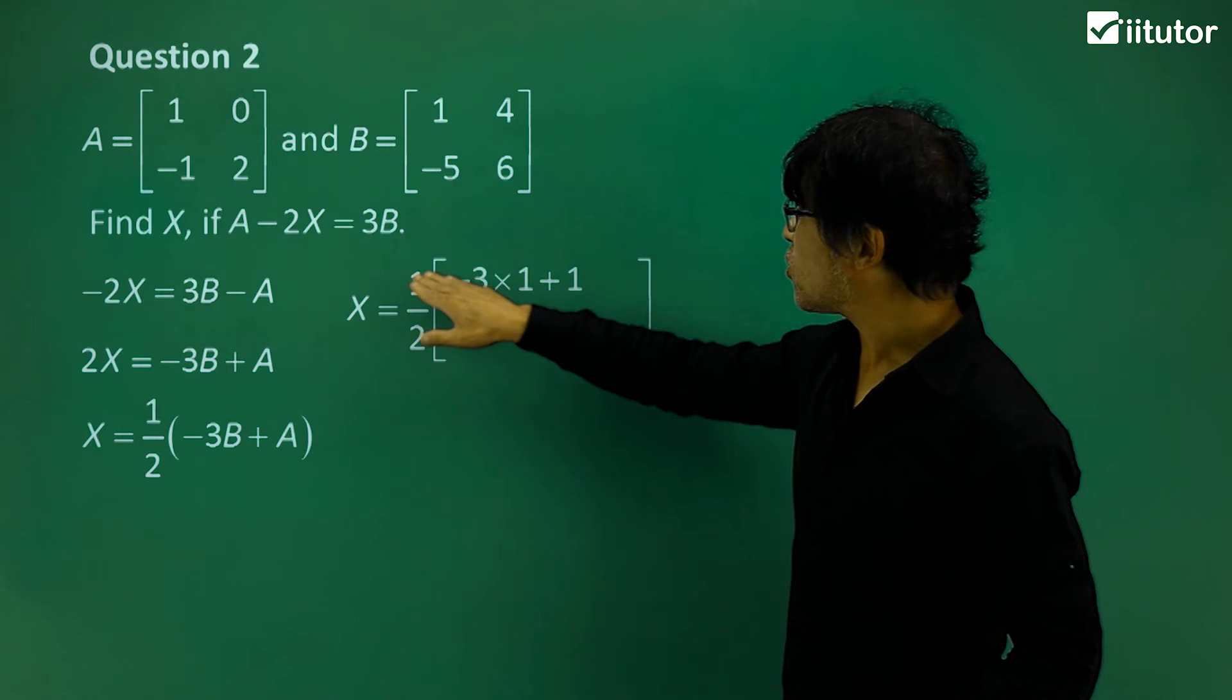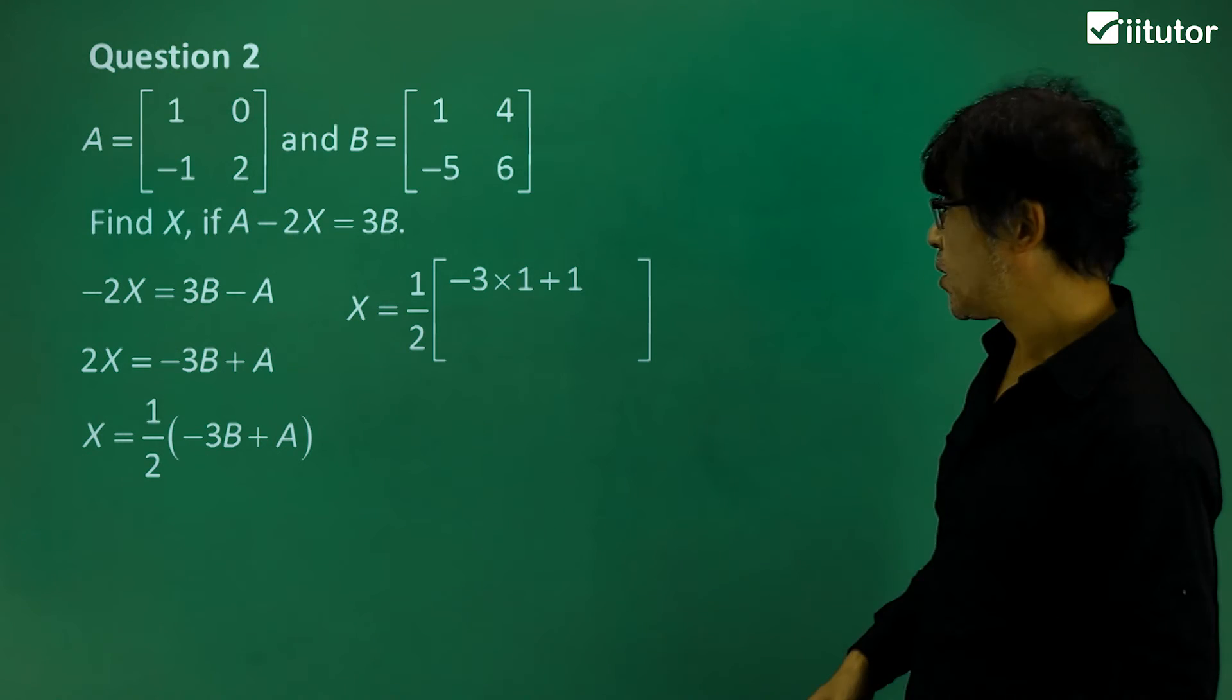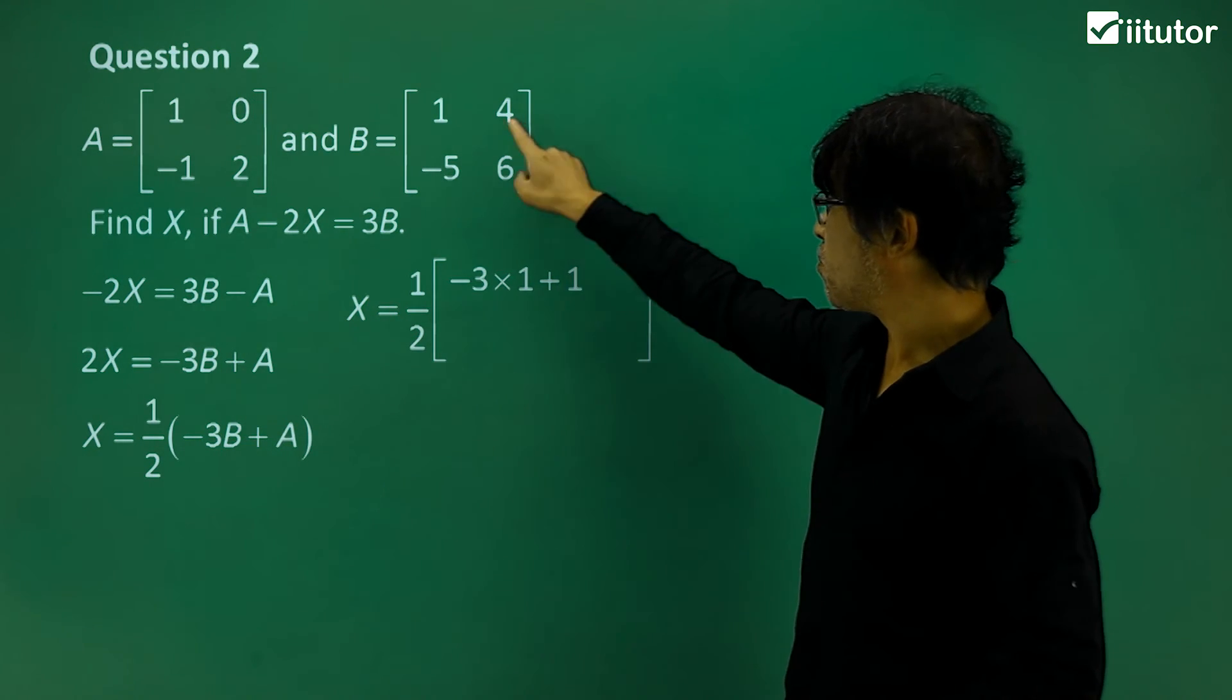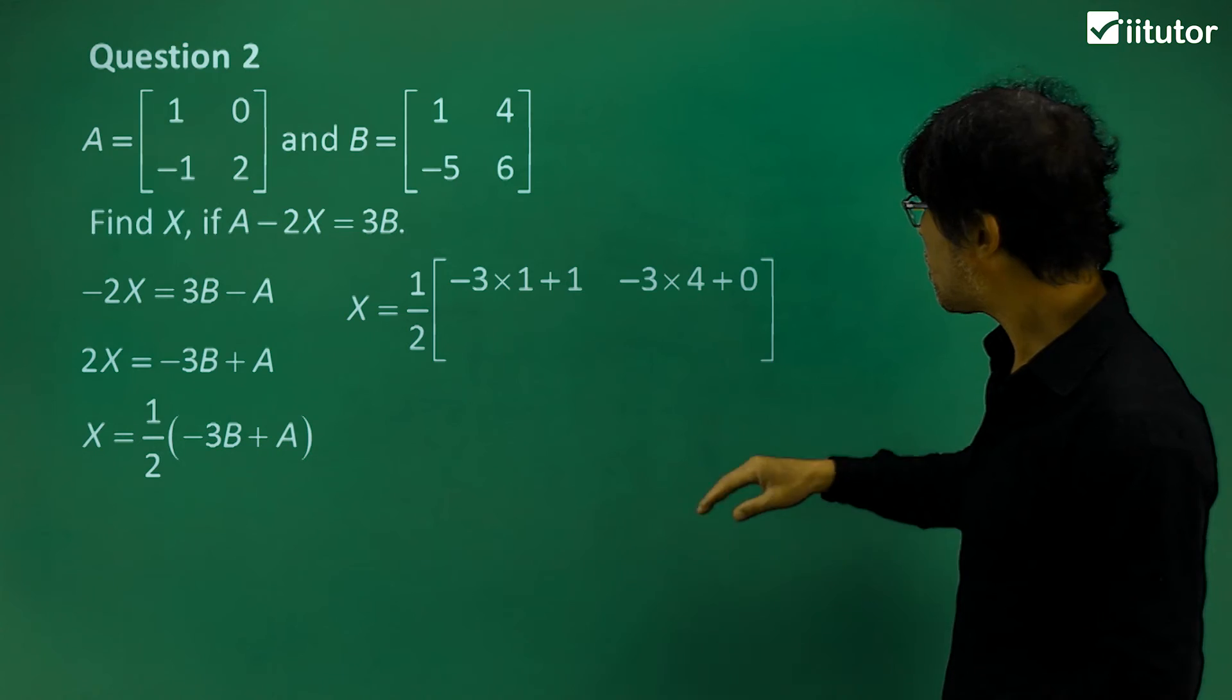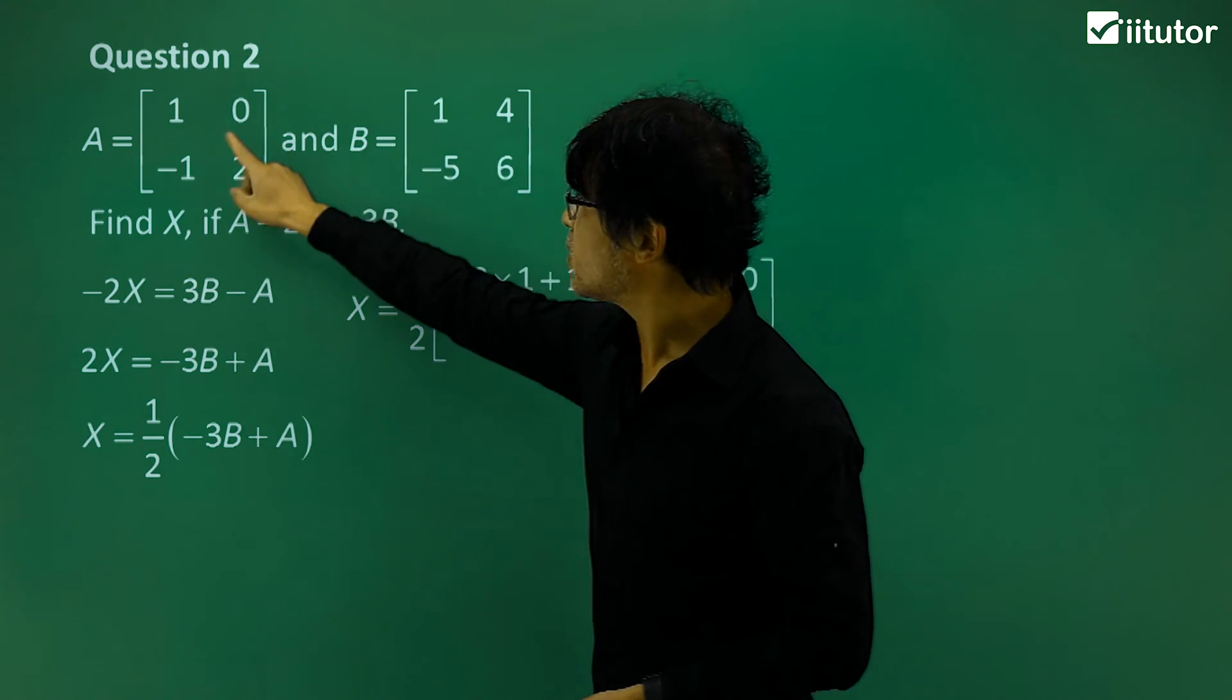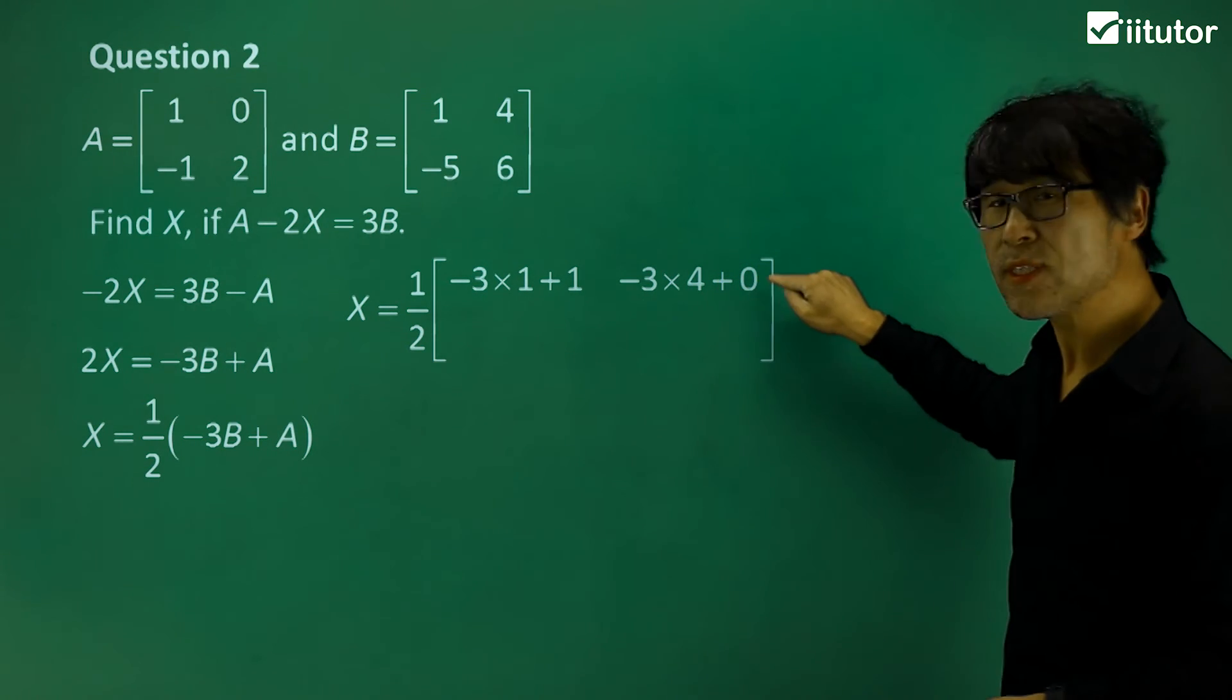So we just move on to the second element over there, which is the first row at the second column. What do you want to do? So negative 3 times B plus A. So write it. Negative 3 times 4 plus 0, which is A at this location for this element.